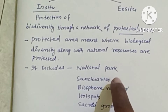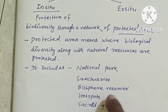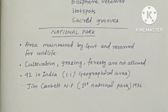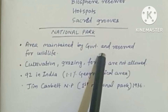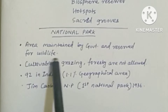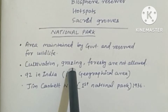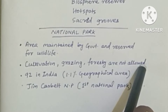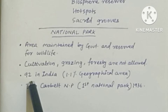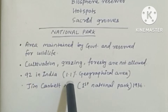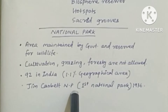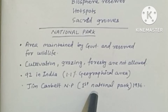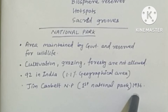Protected areas include national parks, sanctuaries, biosphere reserves, hotspots, and sacred groves. National parks are areas maintained by the government and reserved for wildlife. Cultivation, grazing, and forestry are not allowed. India has 92 national parks till 2005, occupying 1.1% of its geographical area. Jim Corbett National Park was the first, established in 1936.